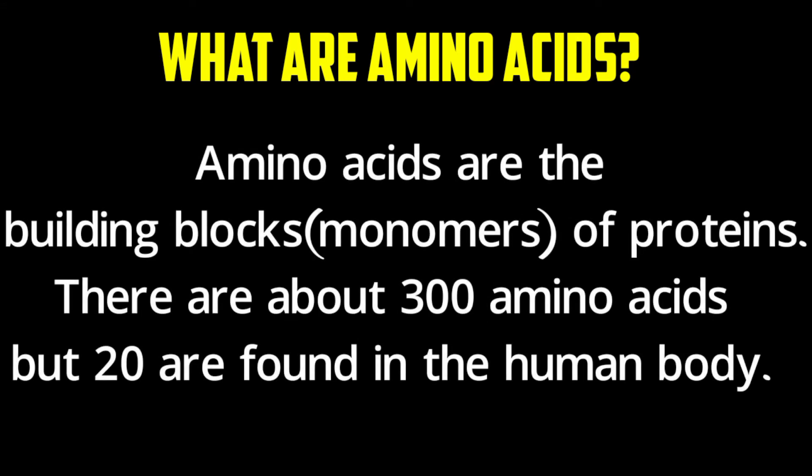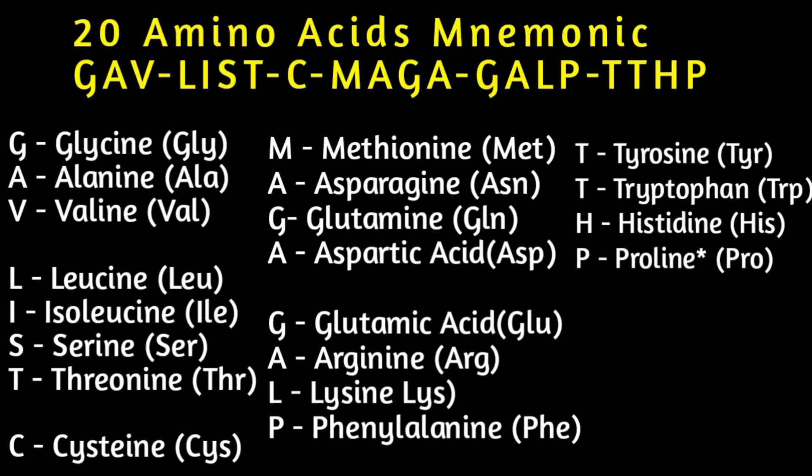Amino acids are the building blocks or monomers of proteins. There are about 300 amino acids, but 20 are naturally found in the human body. To memorize the amino acids, here is a mnemonic: GAVLIST C MAGA GALP TTHP. G for glycine, A for alanine, V for valine, L for leucine, I for isoleucine, S for serine, T for threonine, C for cysteine, M for methionine, A for asparagine, G for glutamine, A for aspartic acid.